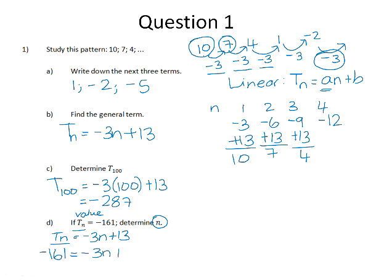If we add 3n to both sides and add 161 to both sides, 13 plus 161 is 174, and then divide both sides of the equation by 3, we get n to be 58, which means that negative 161 is the 58th term in the pattern.